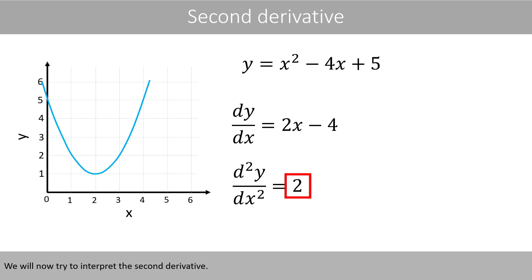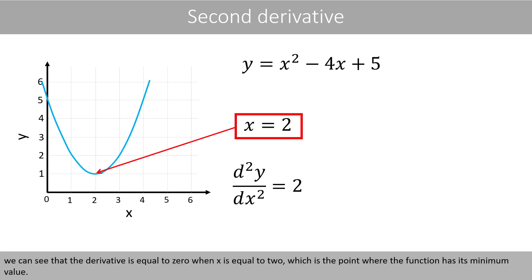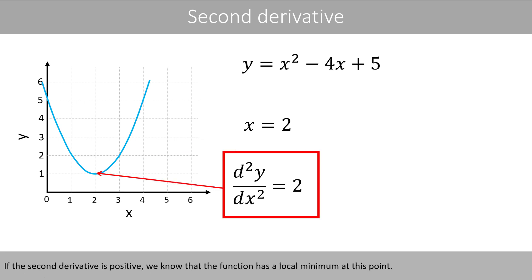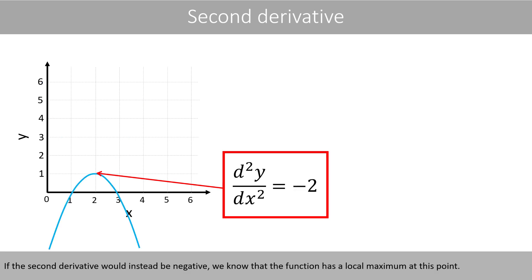We will now try to interpret the second derivative. If we set the left-hand side to 0 in this equation and solve for x, we can see that the derivative is equal to 0 when x is equal to 2, which is the point where the function has its minimum value. If the second derivative is positive, we know that the function has a local minimum at this point. If the second derivative would instead be negative, we know that the function has a local maximum at this point.